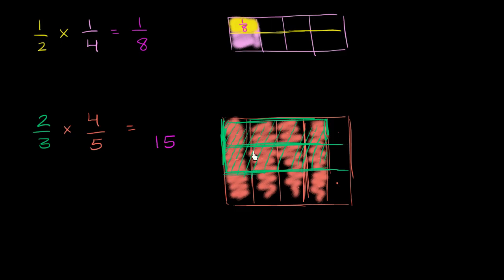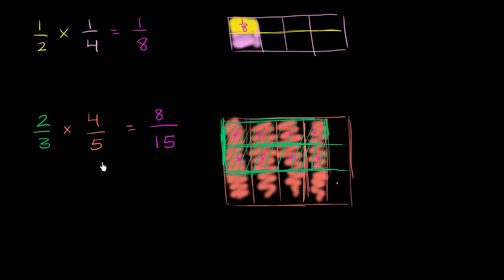And how many of those are in the 2/3 of the 4/5? There are eight of them — eight of the fifteen equal sections. It should hopefully now make conceptual sense that 2/3 times 4/5 can be computed by multiplying the numerators — 2 times 4 is 8 — and then multiplying the denominators — 3 times 5 is 15. So 2/3 times 4/5 equals 8/15.